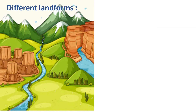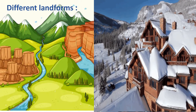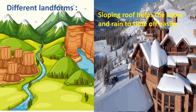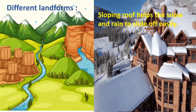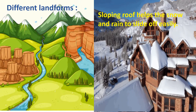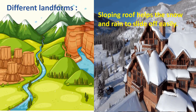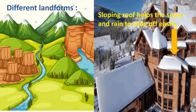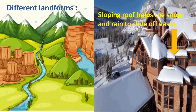People living in different landforms make different houses. People who live in mountain areas build houses with sloping roofs. These sloping roofs allow rain as well as snow to slide off easily.